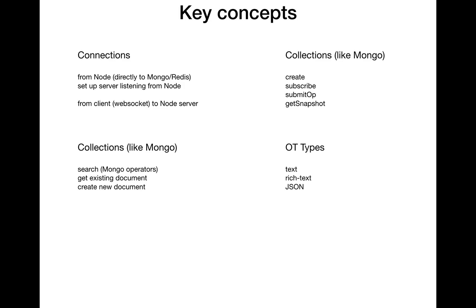A really important concept is operational transform types — what are the different operations you can do to a document, and how can they be transformed meaningfully? Right now there is support for text (the original), rich text (text with formatting like bold and italic), and JSON. JSON is super powerful because it can contain other OT types as leaves. So you could have an object with a key 'text' whose string is treated as OT text for collaborative editing, and another key 'rich text' whose value uses rich text OT operations. This makes it very flexible for our purposes.